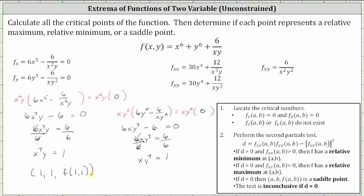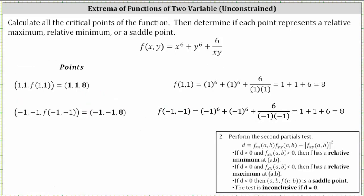Both equations are also true when x and y are both negative one, giving the second critical point (-1, -1, f(-1,-1)). Evaluating the original function, both f(1,1) and f(-1,-1) are equal to eight. So the two critical points are (1, 1, 8) and (-1, -1, 8). The next step is to perform the second partials test.